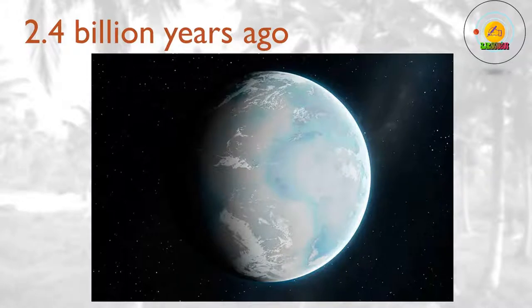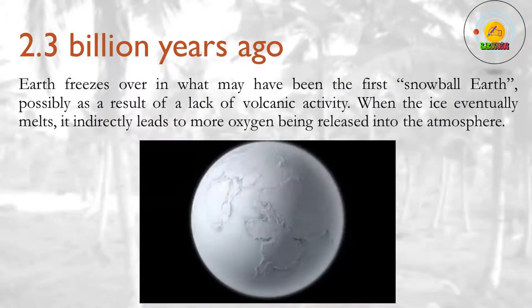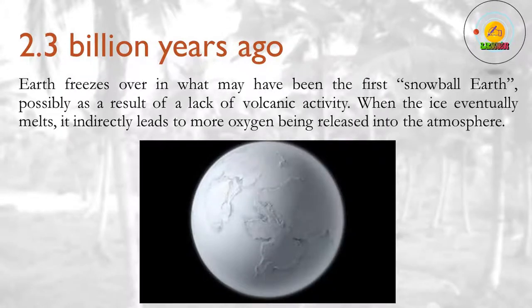Methane reacts with oxygen, removing it from the atmosphere, so fewer methane-producing bacteria would allow oxygen to build up. 2.3 billion years ago? Earth freezes over in what may have been the first snowball Earth, possibly as a result of a lack of volcanic activity. When the ice eventually melts, it indirectly leads to more oxygen being released into the atmosphere.